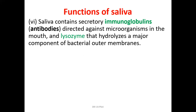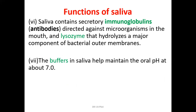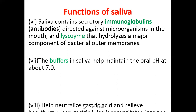Saliva contains buffer systems — including bicarbonates — that help maintain the oral pH at around 6 to 7. These buffers resist changes in pH within the oral cavity. Saliva also helps neutralize gastric acid and relieve heartburn when gastric secretions are regurgitated into the esophagus. The buffers in swallowed saliva neutralize acid in the esophagus, preventing heartburn.